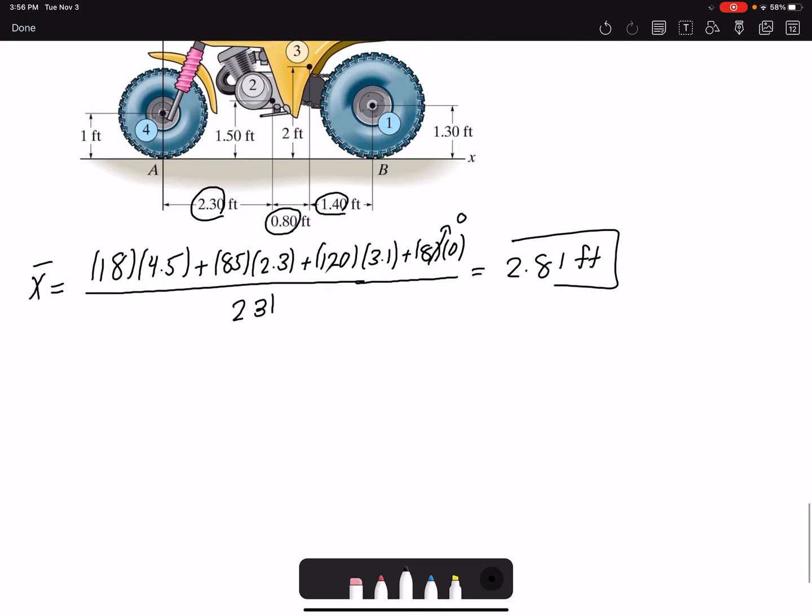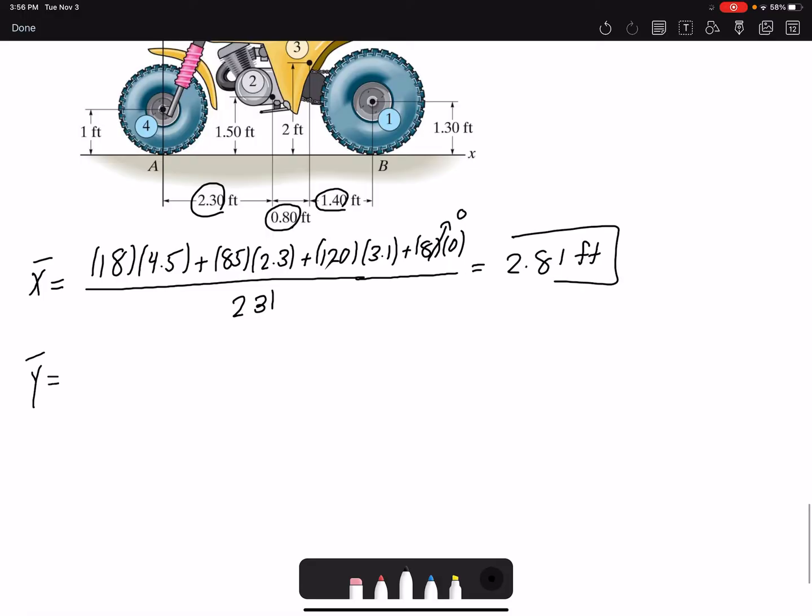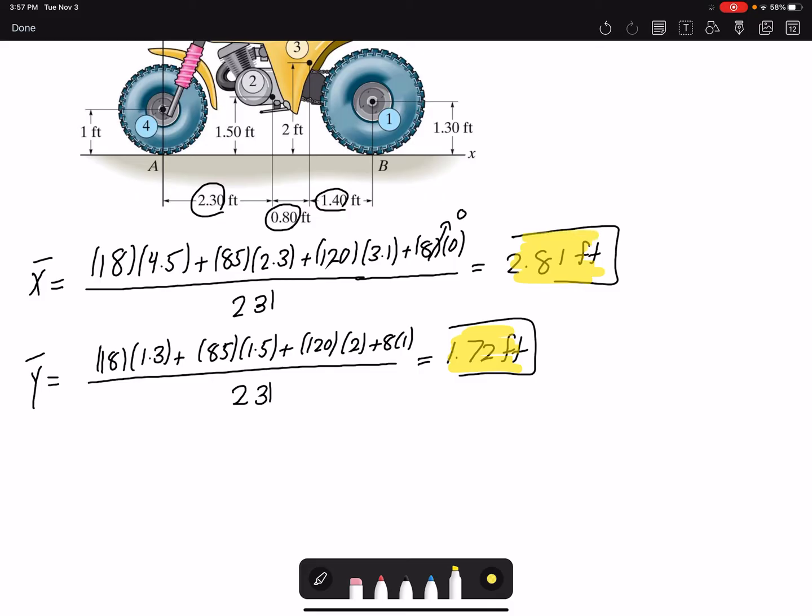We can do the same thing for Y bar. We have 18 times 1.3 plus 85 times 1.15 plus 120 times 2 plus 8 times 1 divided by 231. We get 1.72 feet. That's the first part of the problem, finding the centroid or the center of gravity. Here it's technically center of gravity because we are not talking about the geometry necessarily, but the weight.